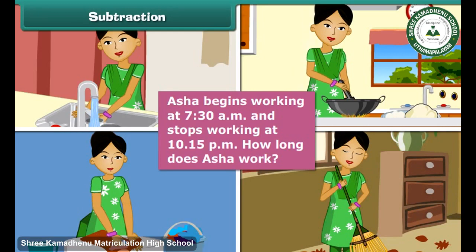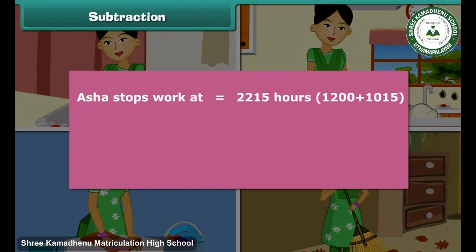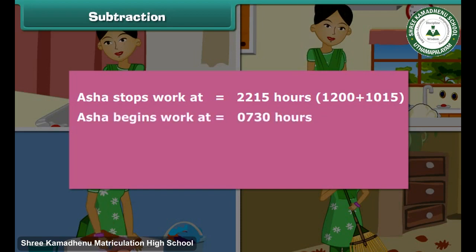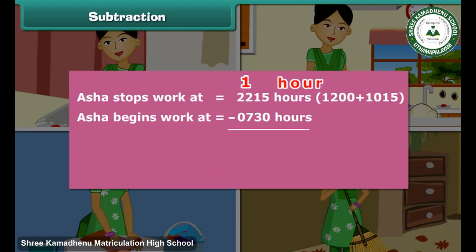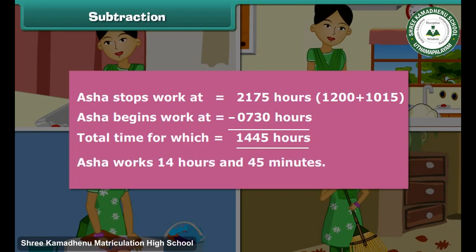Asha begins work at 7:30 a.m. and stops working at 10:15 p.m. How long does Asha work? We first express the times using the 24-hour clock. Asha stops work at 2215 hours (1200 plus 1015). Asha begins work at 0730 hours. Since we cannot subtract 30 from 15, we borrow an hour, adding 60 minutes and subtracting 1 from hours. Therefore, Asha works 14 hours and 45 minutes.